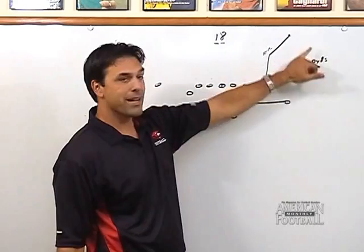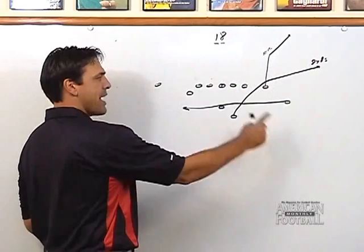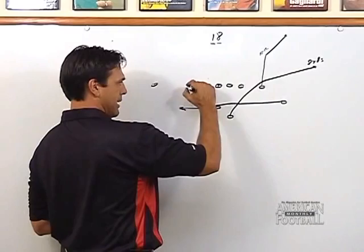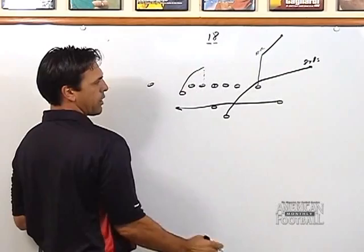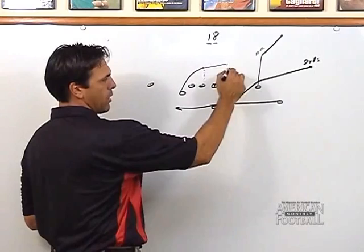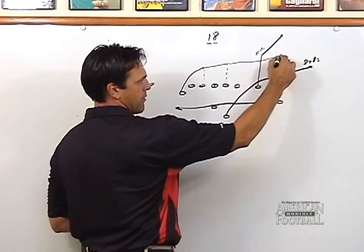Working our way right to left, the next receiver over — in this case it's the wing — has a drag. Meaning he will inside release, and he will be on the play side guard at four yards. On the opposite side he will be at six yards depth, and once he clears the tackle he will be at 10 to 12 yards depth.